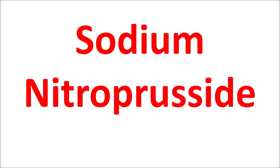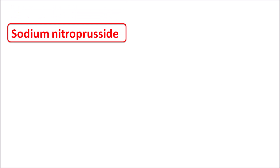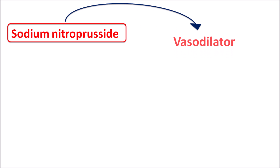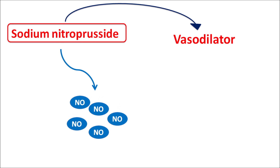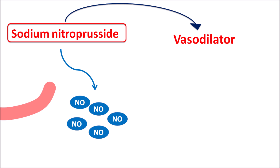Today we are going to discuss sodium nitroprusside. This drug is a peripheral vasodilator, and just like organic nitrates, it can release nitric oxide which produces vasodilatation. The released nitric oxide acts on the blood vessels to produce vasodilatation, which reduces blood pressure.